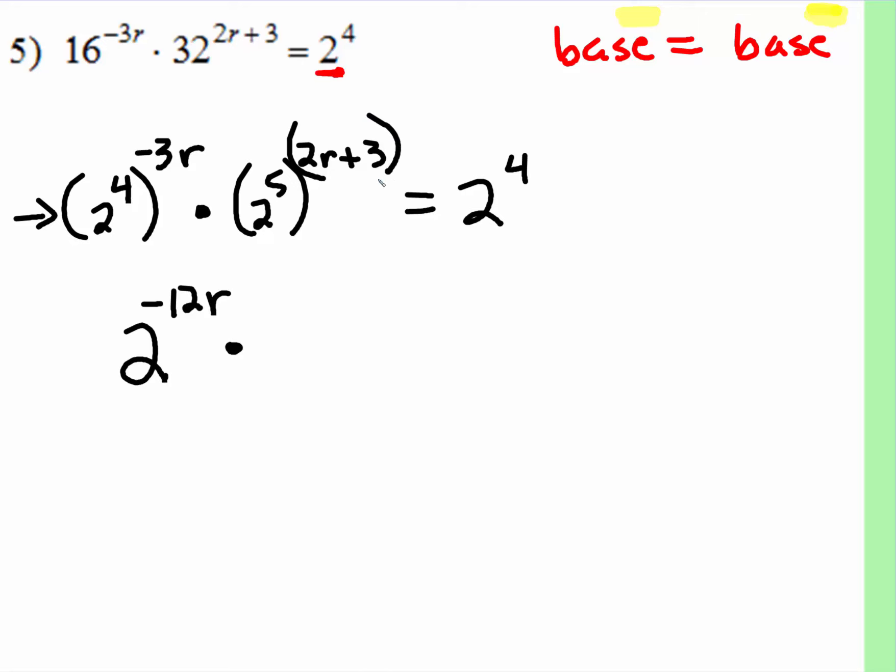So we can rewrite that as 2 to the 4 times negative 3r is negative 12r, times 2 to the 5th to this. Well, that is an expression. Remember, it's multiplication. This is going to become a distributive. So that's going to be 2 to the 5 times 2r is 10r. 5 times 3 is 13.